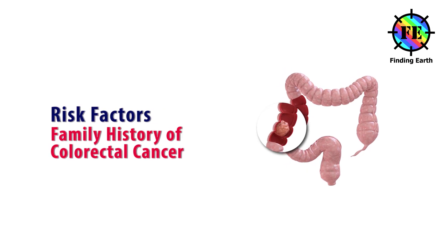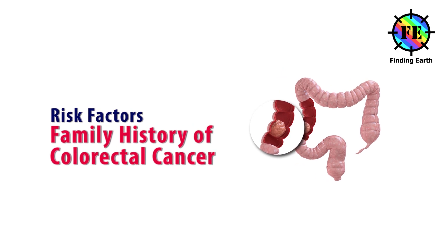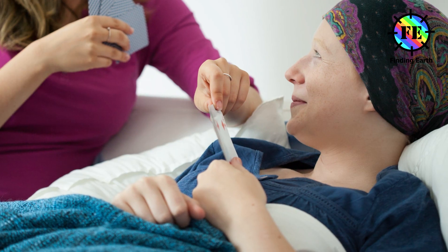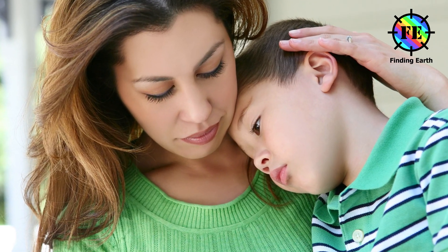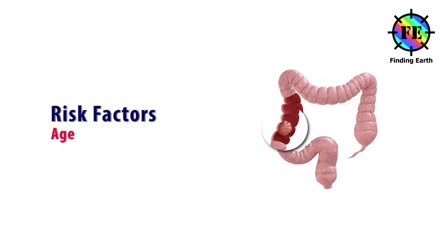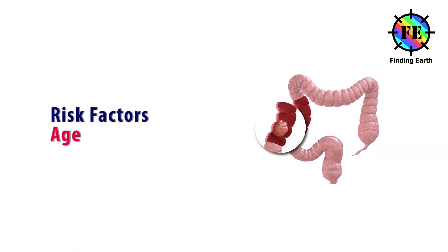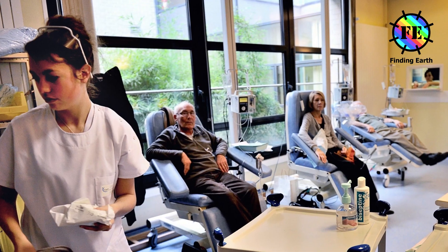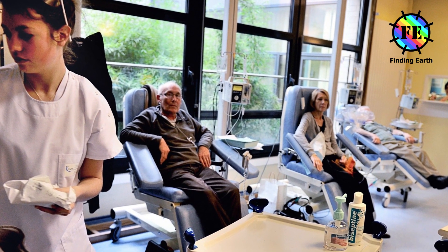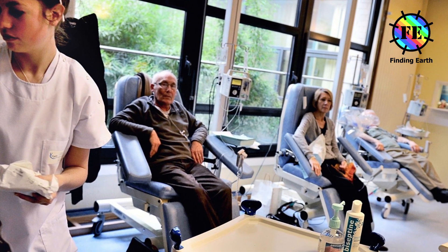Family history of colorectal cancer: Individuals with a family history of colorectal cancer are at an increased risk of developing the disease. The degree of risk depends upon the type of relative affected. Age: The cells in a 70-year-old body have had more time to accumulate the changes needed to form cancer cells, but those in a child are much less likely to have acquired the required changes. More than 91% of patients are diagnosed with colorectal cancer over the age of 50.